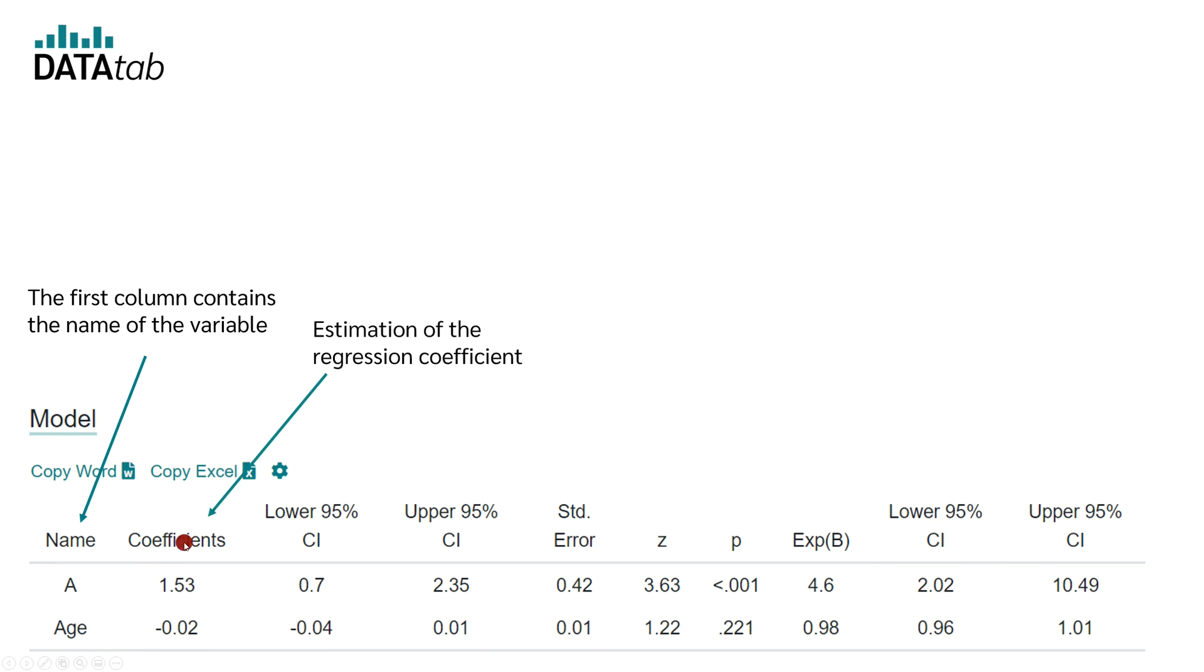Most important of this table is the estimated regression coefficient and the p-value. With the p-value, you can see if the regression coefficient is significantly different from zero.